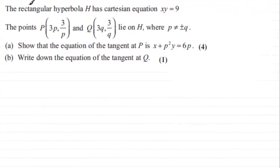Hi, now what we have here is the rectangular hyperbola H has Cartesian equation XY equals 9 and we've got these points P and Q with coordinates 3P, 3 over P and 3Q, 3 over Q and these points lie on H where P doesn't equal plus or minus Q. What we've got to do is show that the equation of the tangent at P is X plus P squared Y equals 6P and then write down the equation of the tangent at Q.